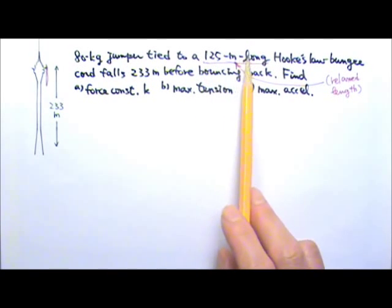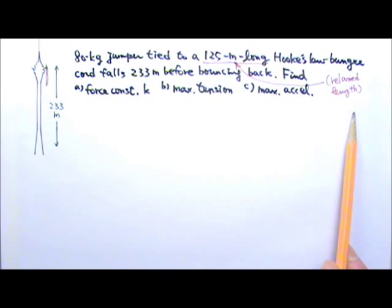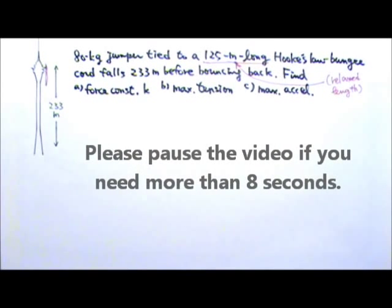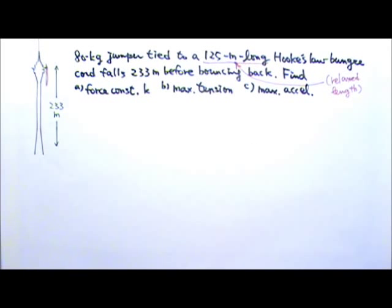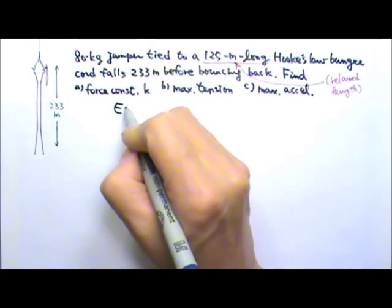The 125 m is the relaxed length of the bungee cord. We will ignore air resistance and friction, which means that the total mechanical energy stays constant.